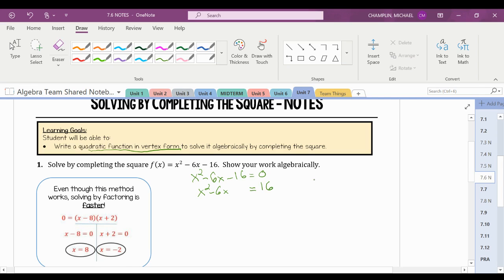When we're completing the square, we need to know what the b value is divided by 2 and square it. And when we do that, we're going to get negative 6 divided by 2 squared, which equals negative 3 squared, which equals positive 9.